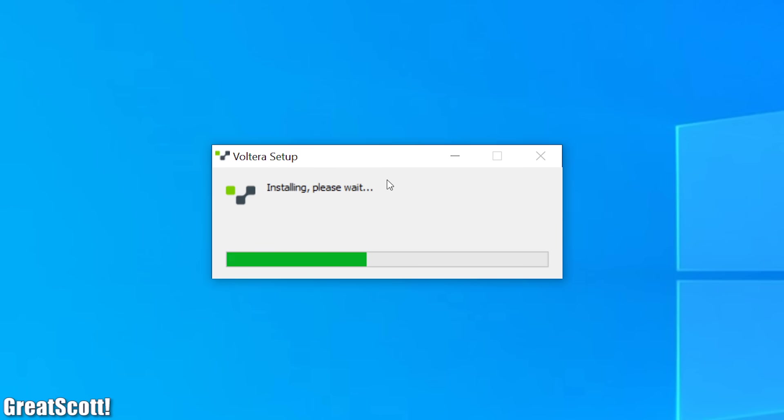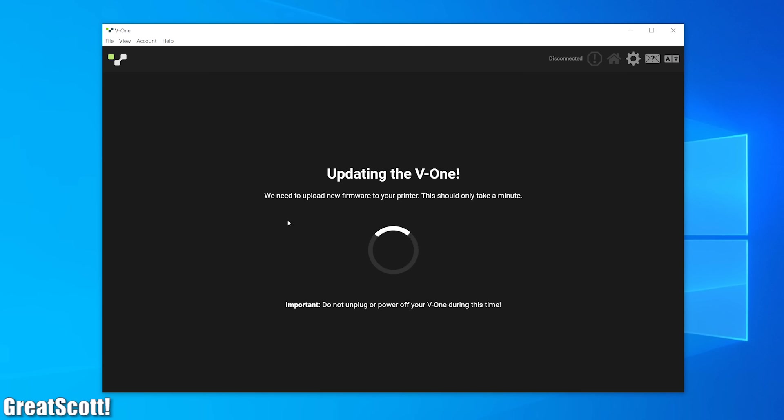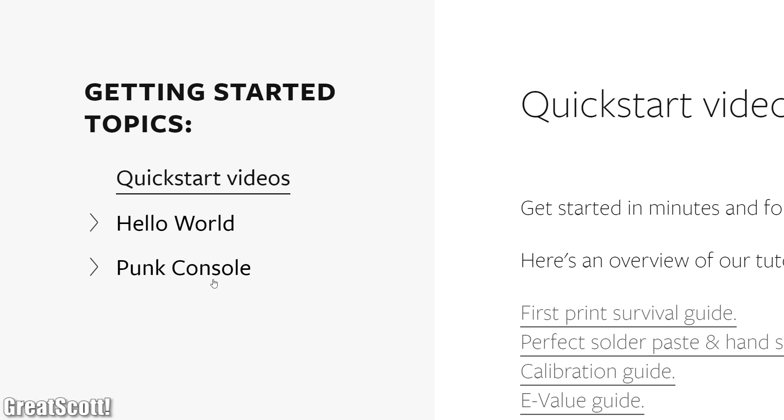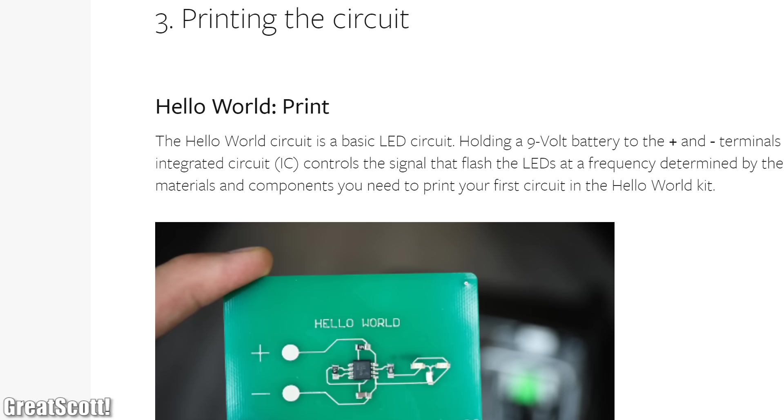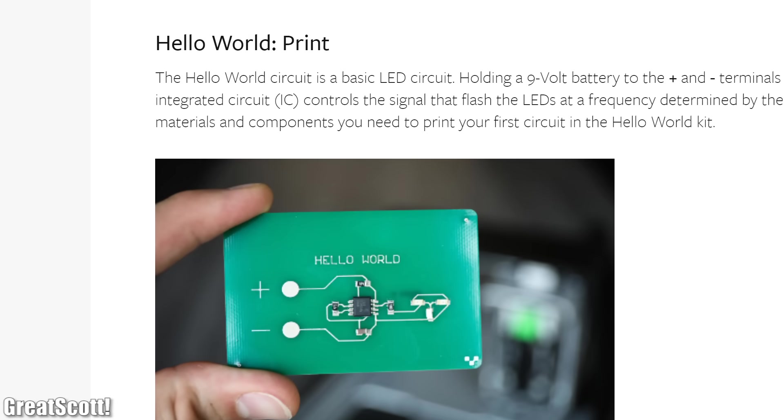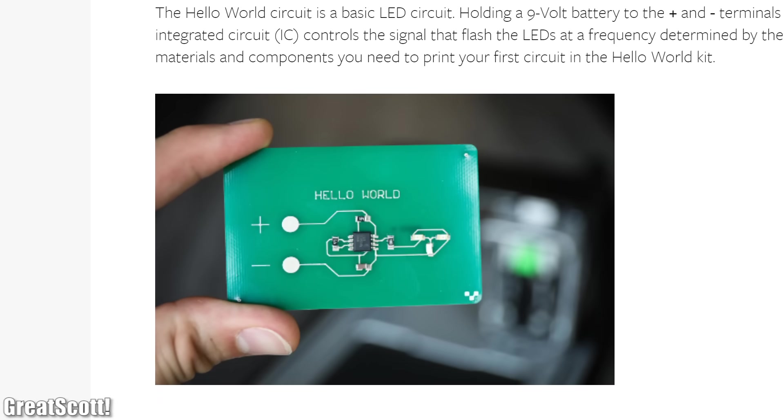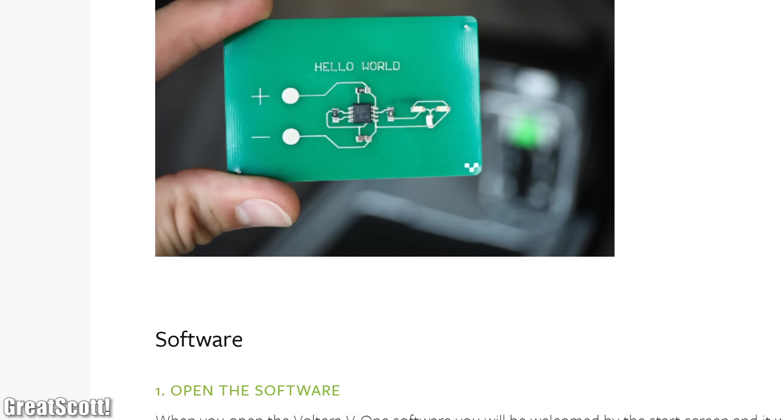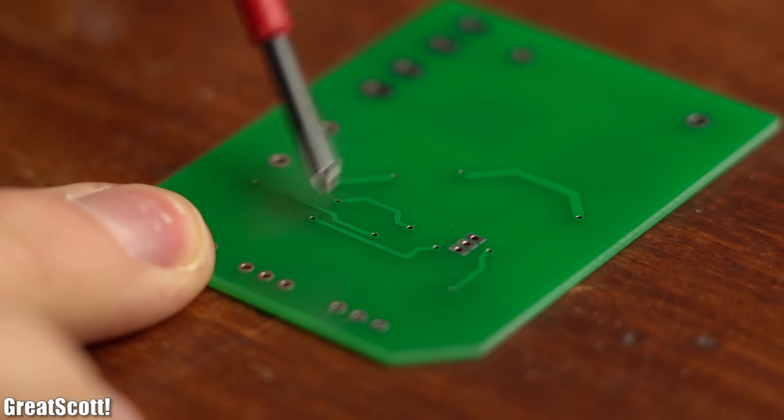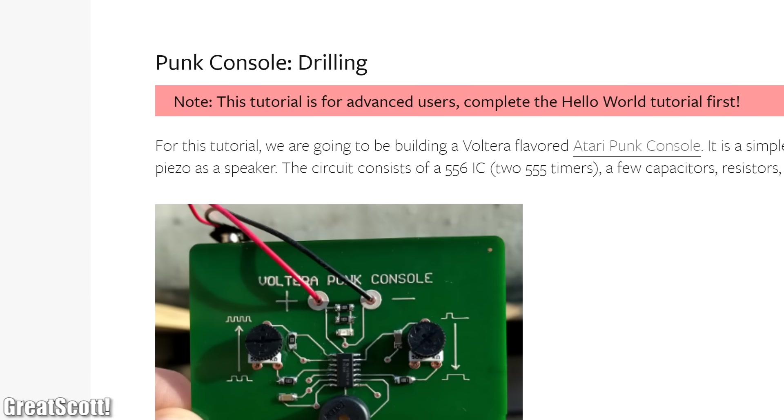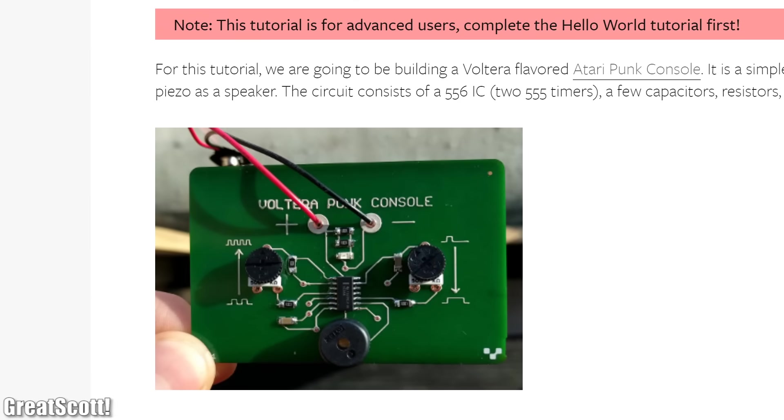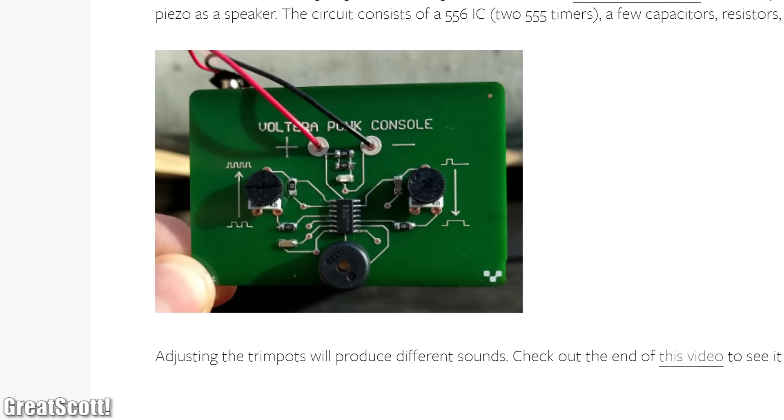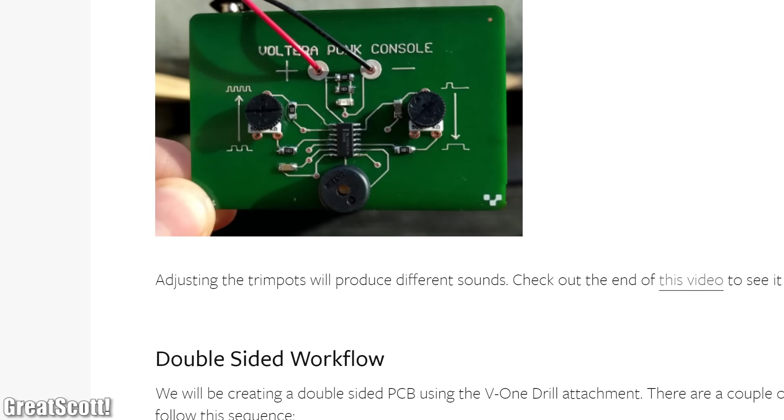Before that, I installed and opened the software for the printer and then had a look at the two getting started projects on the Volterra website. Now the hello world project was only single sided and thus did not require drilling to, for example, create vias which are kind of mandatory for my own PCB projects. So I skipped that one and instead had a look at the punk console which was double sided and comes with vias. Perfect!